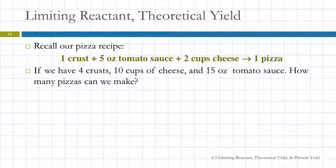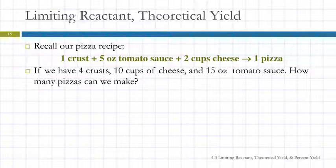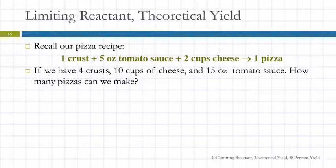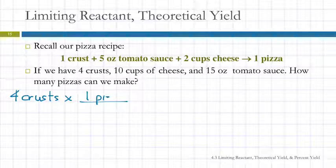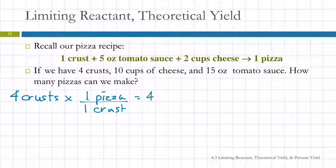And you can't skimp on the cheese or the sauce. So what's the answer — three? What about four? No? How do we figure this out? If we had four crusts, how many pizzas could we make? Provided we've got enough of everything else, we could write that out: four crusts, and we get one pizza per crust. So that would give us four pizzas.